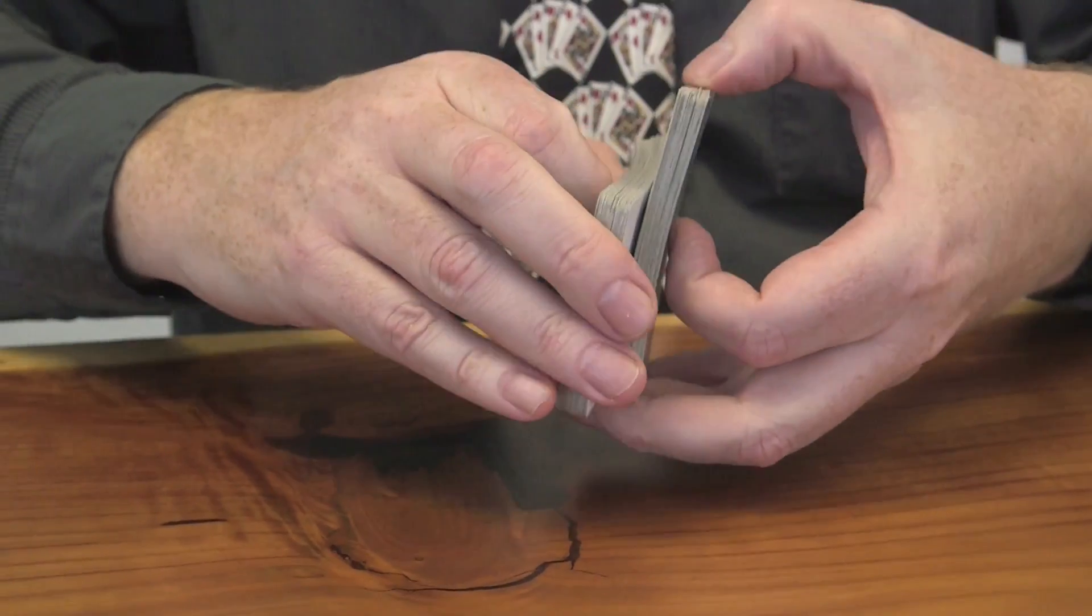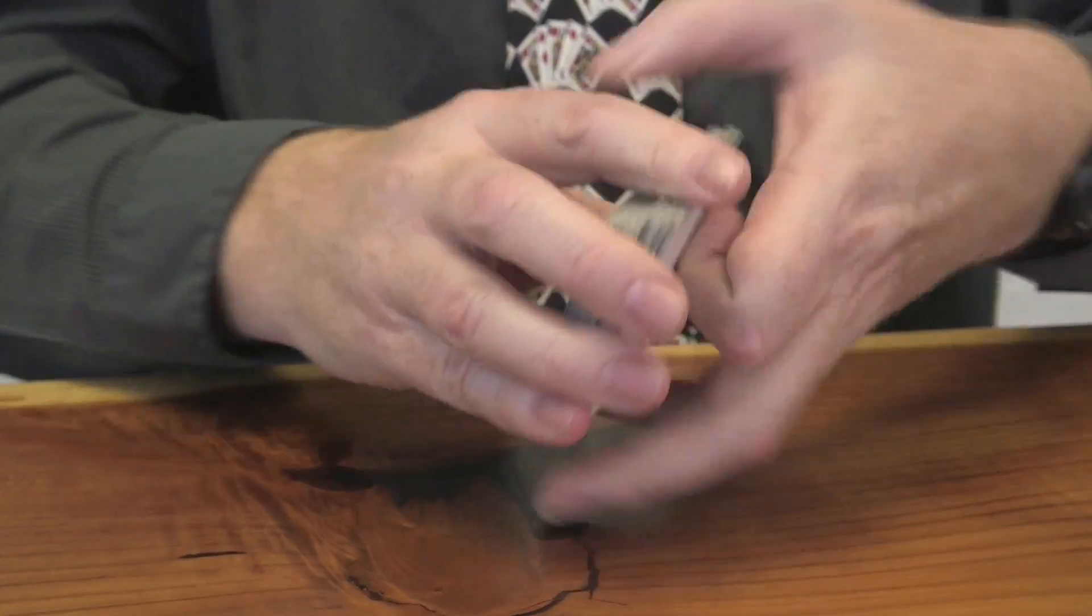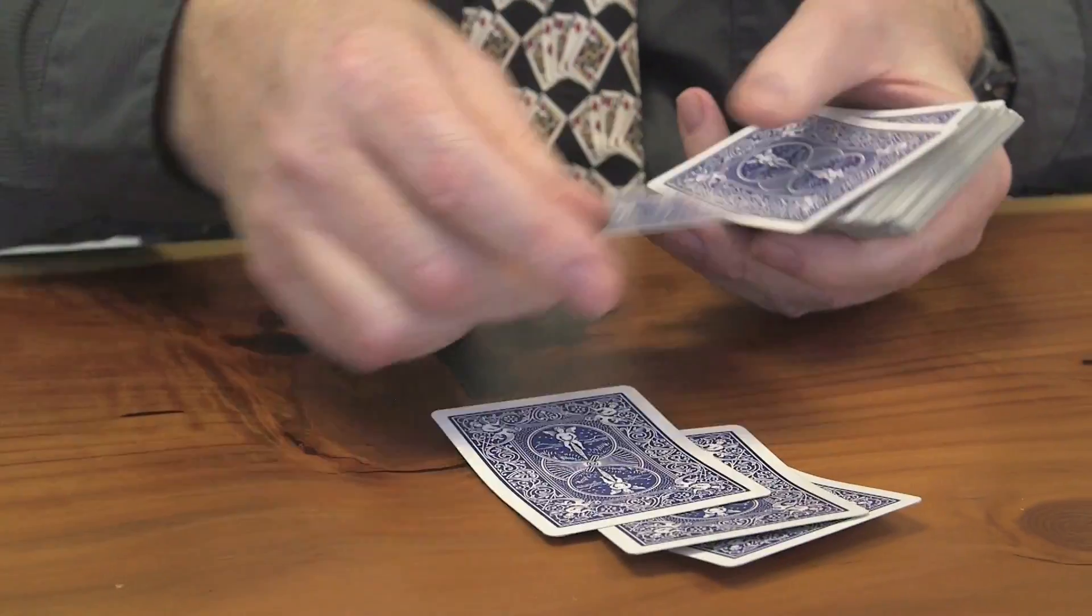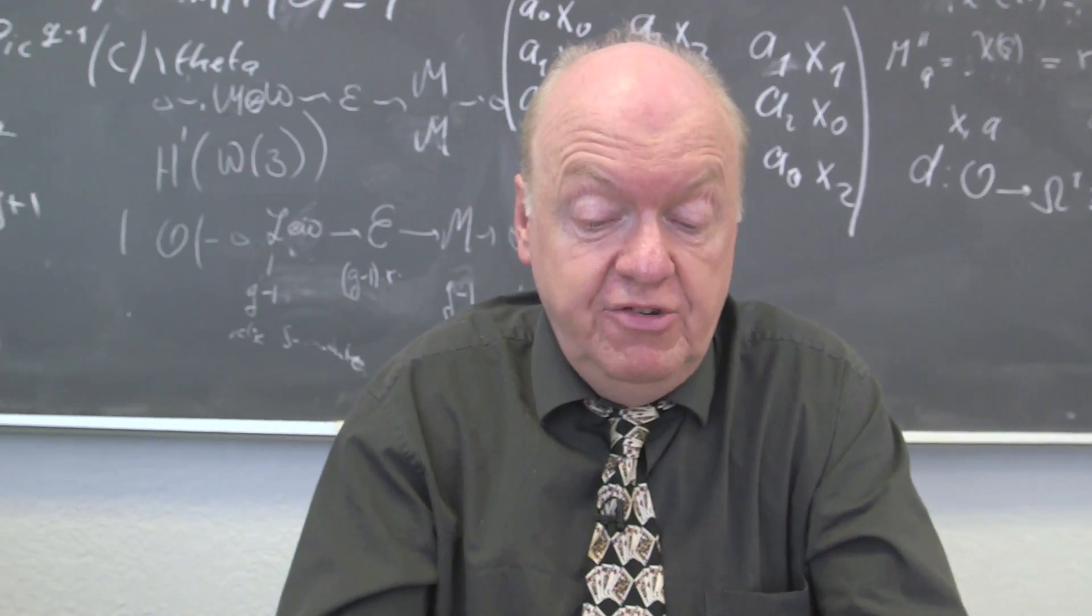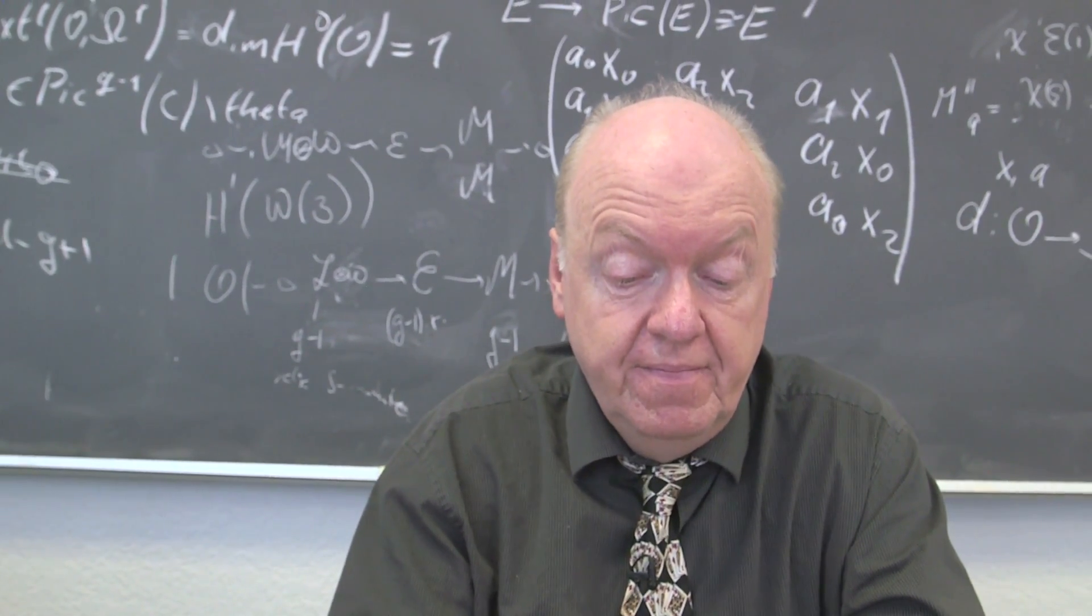And then what I do is I have a couple of people pick a couple of cards. Maybe I'll take off the top, I don't know, four or five, that looks like five. I mix them up thoroughly and you tell me when to stop mixing. Okay, stop.